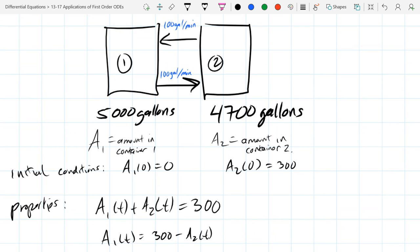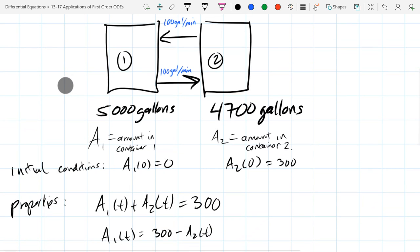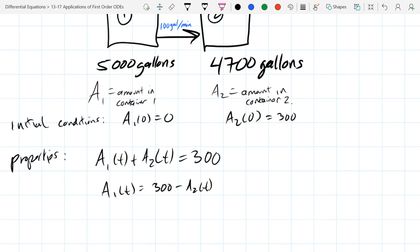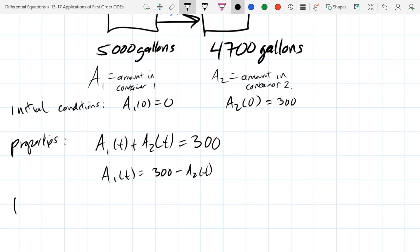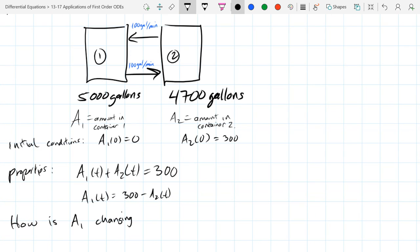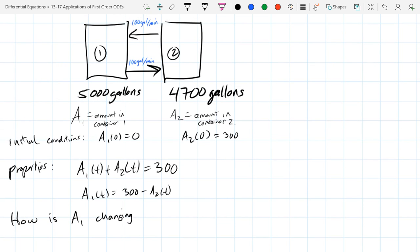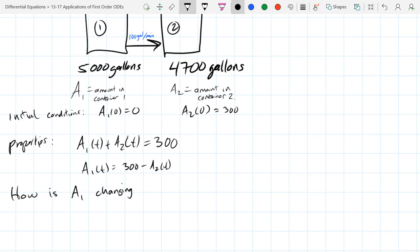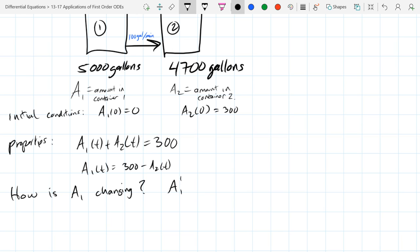So now we need to figure out how is the amount changing. This is the differential equations part, the tricky part. How is A1 changing? Take the derivative. So A1 prime is how it changes. So I'm going to write A1 prime, this is d/dt of A1.